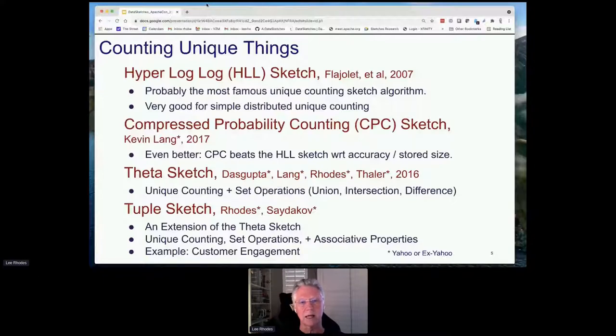Then there's the tuple sketch, which is an extension of the theta sketch and allows associative properties. Each row of the sketch has an arbitrary tuple that you can define that goes along with the sketch that you can also do set operations on. For example, we have used it for things like customer engagement and other kinds of marketing analysis, advertising analysis and so on.